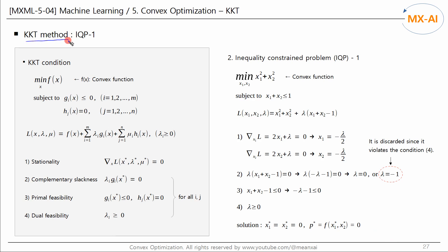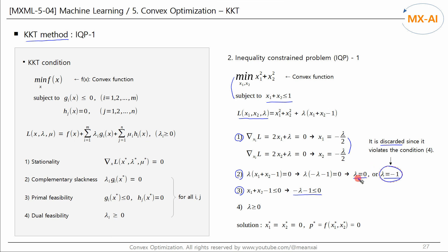Next, we will use the KKT method to solve the inequality-constrained optimization problem. The optimization problem has one inequality constraint, and the Lagrange primal function is like this. Finding x1 and x2 with the first KKT condition gives the results shown. The second KKT condition — complementary slackness — gives lambda equal to zero or negative one. The lambda of negative one is discarded because it violates the fourth condition. According to the third condition, minus lambda minus one is less than or equal to zero. Since the lambda is zero, it holds true, so the final lambda is zero and the optimal solutions are as follows.